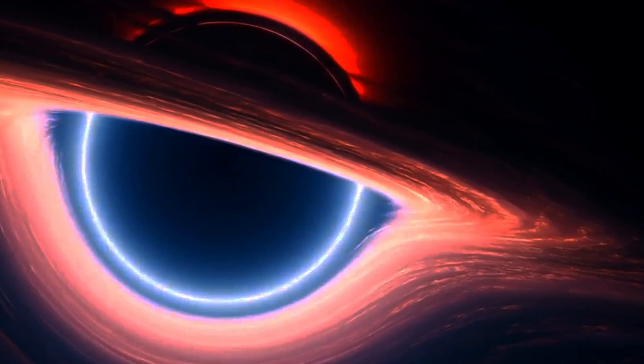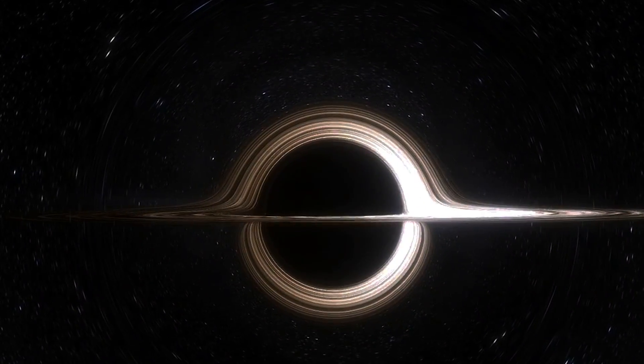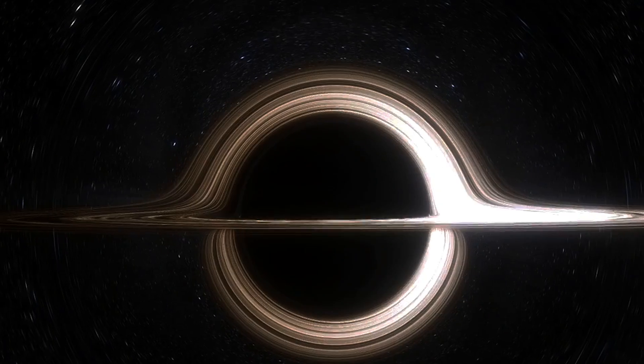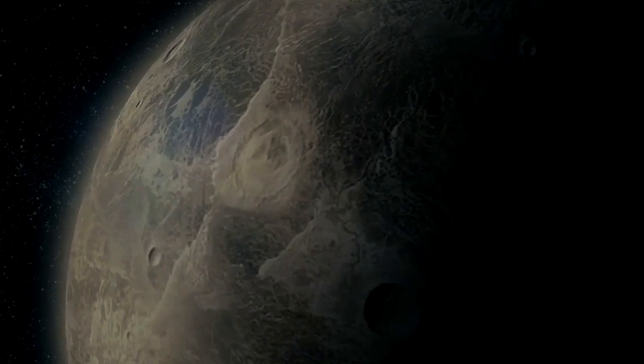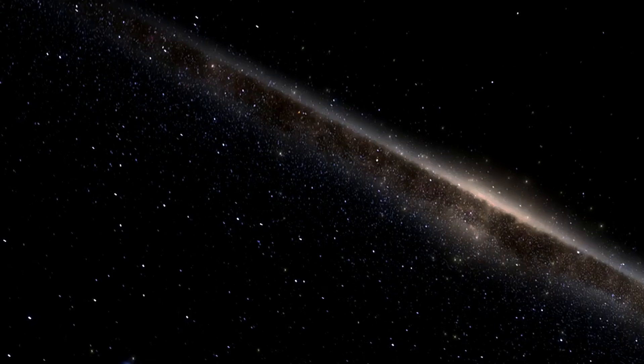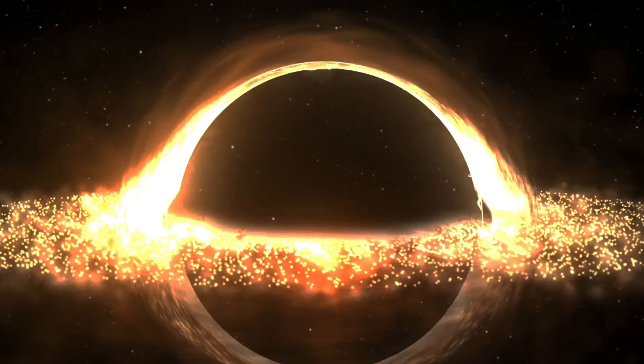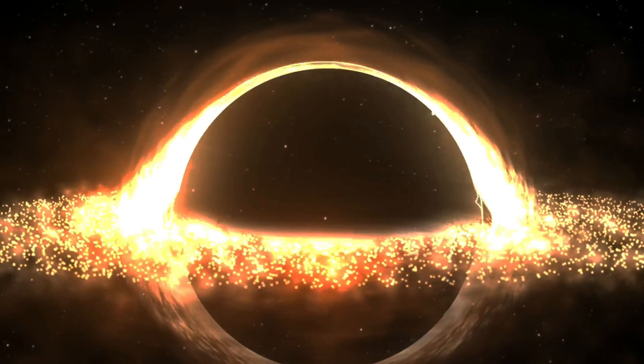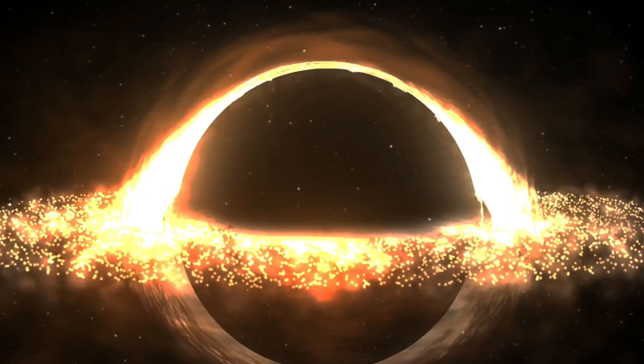While stellar and supermassive black holes have long captured our imaginations and fueled scientific inquiry, there exists another, far more enigmatic category: micro black holes. These minuscule entities, also known as primordial black holes, present a fascinating puzzle. Imagine the mass of Mount Everest compressed into an object with a Schwarzschild radius smaller than a nanometer. At such a scale, the density would be so extreme that no known mechanism in the current universe could form such compact objects. This leads scientists to speculate that micro black holes might have originated in the early universe right after the Big Bang, when matter densities were extraordinarily high.